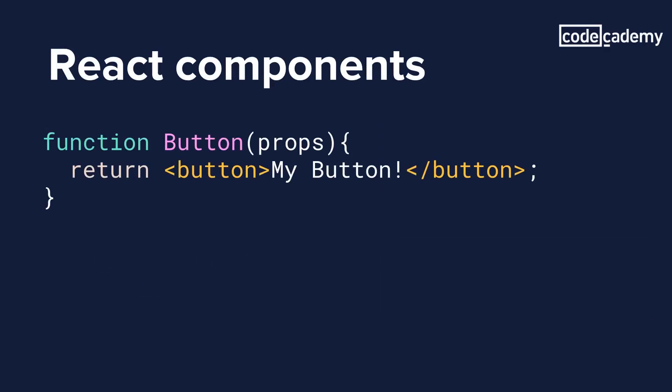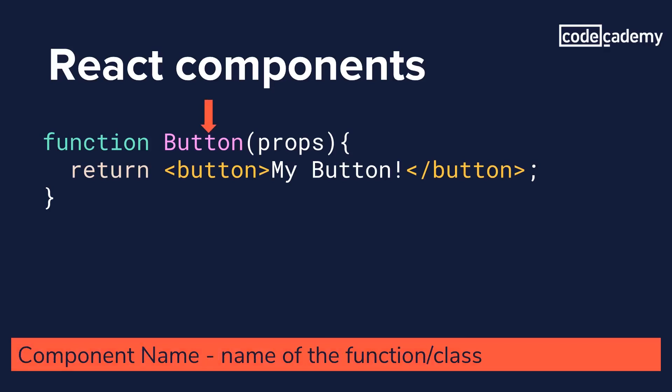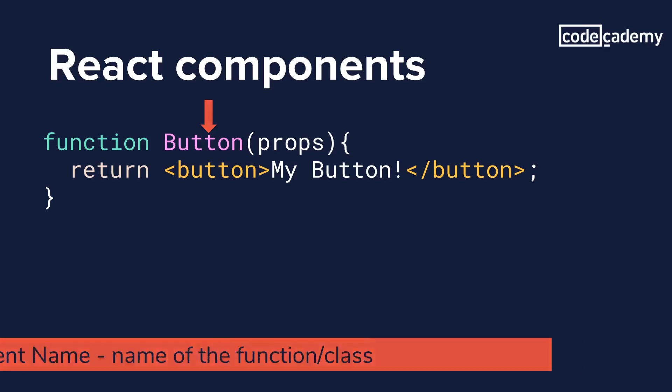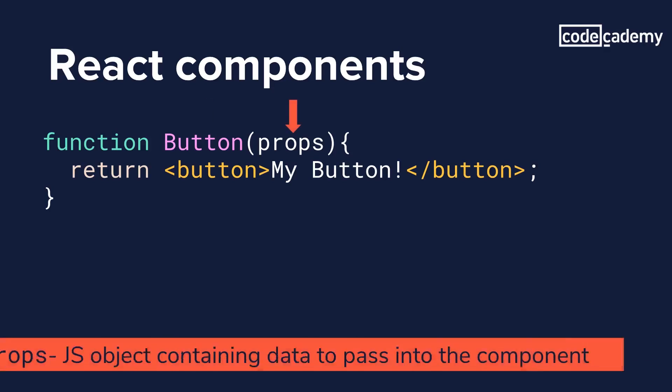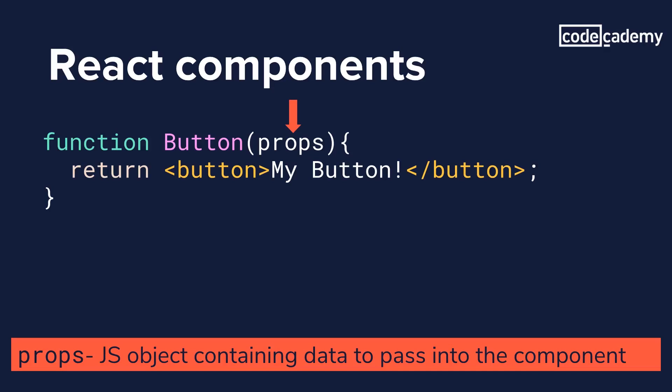Let's take a look at an example function component for a button. The name of the function is the name of our component — in this case, button. The function takes an argument called props, short for properties, and this is how we pass information and data into our component.